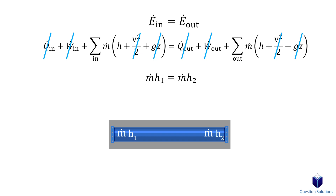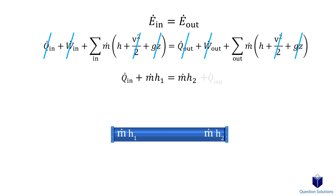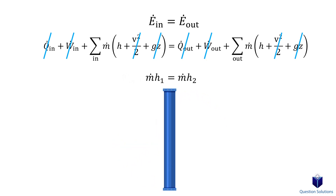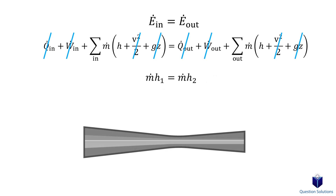Now let's go through the specific cases where we have to consider the types of energy we just crossed out. If the pipe is not well insulated, we can have heat input or heat loss. If there is a heating element inside the pipe heating up the fluid, then we would have work input. If there is a large elevation change, then potential energy has to be considered. If we have ducts with variable cross-sectional areas, then the kinetic energy of the fluid might have to be considered. So depending on the type of pipe or duct, we will need to consider what type of energy is involved.